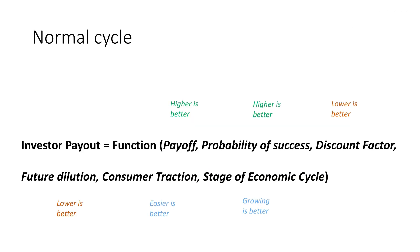Normally, in a normal cycle, investors are not interested in investing just for the sake of it. Their expectation is that they'll put in a dollar and get $10, $15, or $100 out somewhere over the next five to ten years. That dollar out is their payout.